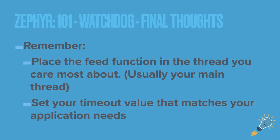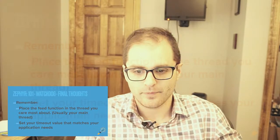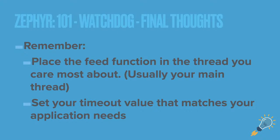Place the feed function in the thread you most care about — if it runs all the time, it won't help you detect lockups. Typically it goes in the main thread. Ultimately, you want to find out why a thread is locking up; the watchdog timer is not a solution — it's a reliability mechanism for when you're extremely paranoid. Your application should work without it. The timeout, tick interval, and feed frequency are all application-dependent.